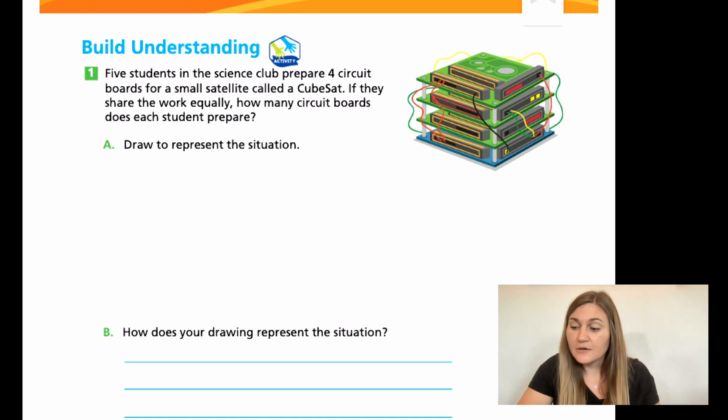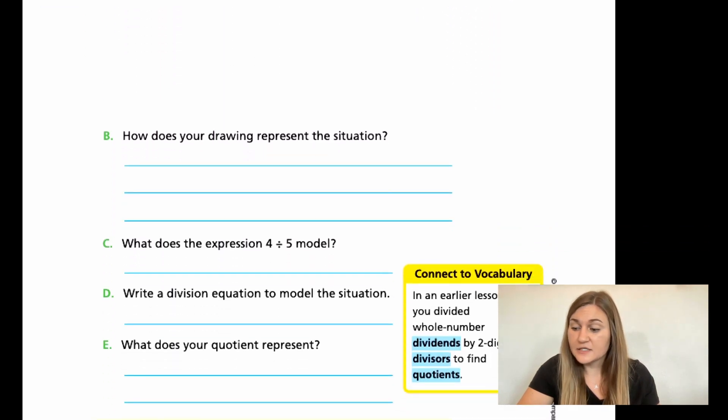And then for B, how does your drawing represent the situation? So you did it in pictures. Now I would just explain in words what you did. For C, what does the expression four divided by five model in this problem? And then D, can you write a division equation to model the situation? And then for E, what does your quotient represent? All right, so I want you to try these couple of questions on your own and then come back and we will solve it together. So go ahead and hit pause here.